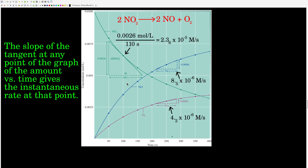If we plot concentration versus time, the green curve is nitrogen dioxide — the reactant — decreasing over time. The blue curve is nitrogen monoxide, increasing over time. The purple curve is oxygen, also increasing over time. Notice that the concentration of nitrogen monoxide is twice that of oxygen, because for every one molecule of oxygen produced, we make two molecules of nitrogen monoxide — both coming from the same source, the decomposition of nitrogen dioxide.